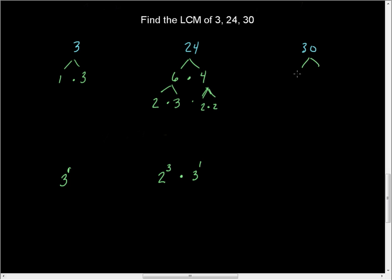In 30, when I split 30 up, it's 3 and 10. 3 is prime, 10 is not. 10 is 2 times 5. And so that way, I have 2 to the first times 3 to the first times 5 to the first.